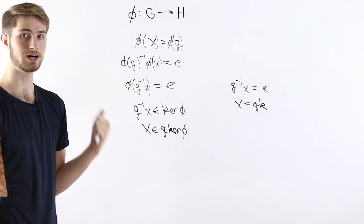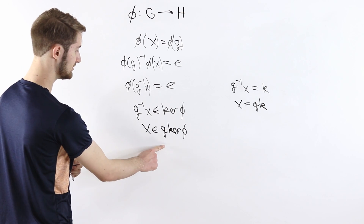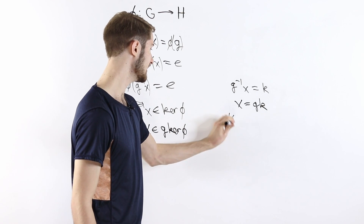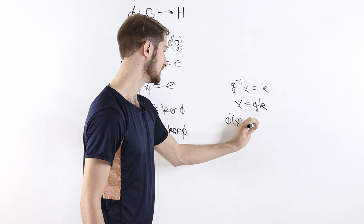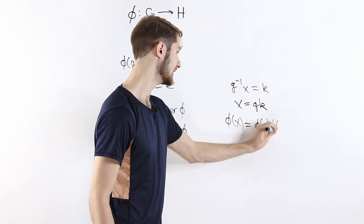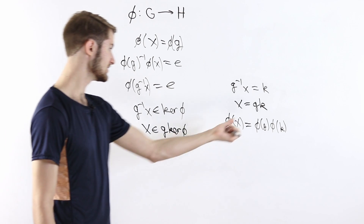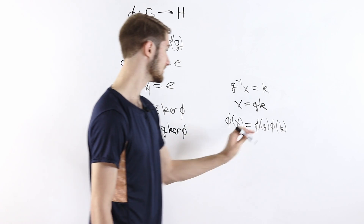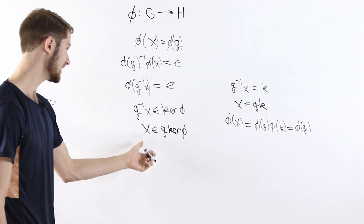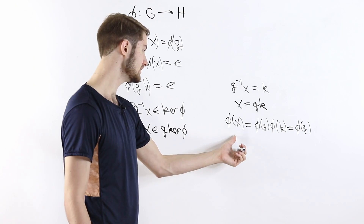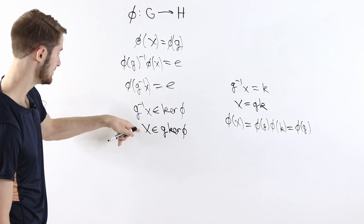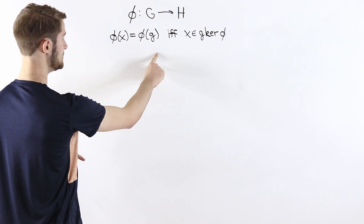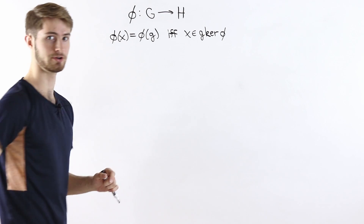The implication also works in the opposite direction. If x is an element of g times the kernel of phi, we can write x as g times k. Then phi of x equals phi of gk, which equals phi of g times phi of k because phi is a group homomorphism. Since k is in the kernel of phi, phi of k is just the identity, so this equals phi of g. Therefore phi of x equals phi of g if and only if x is an element of the coset g times the kernel of phi.